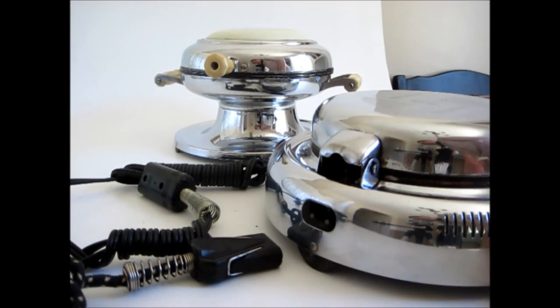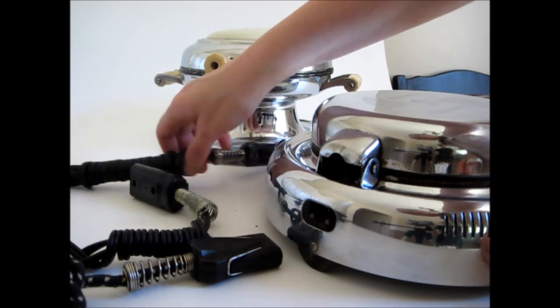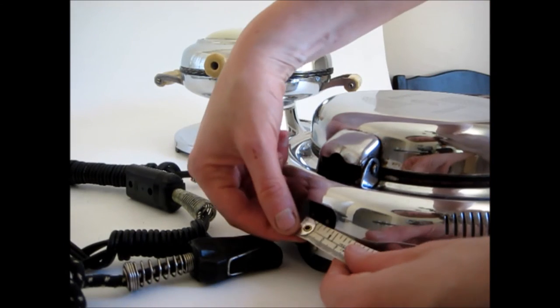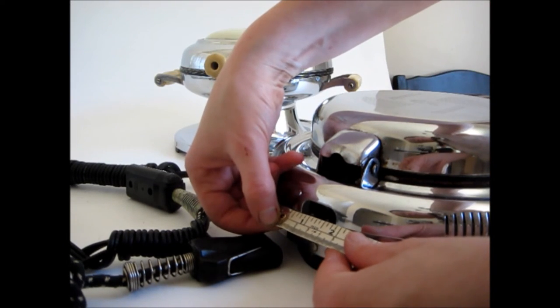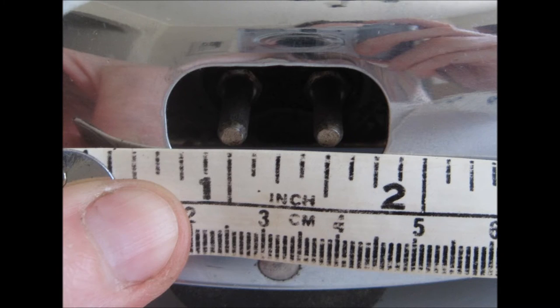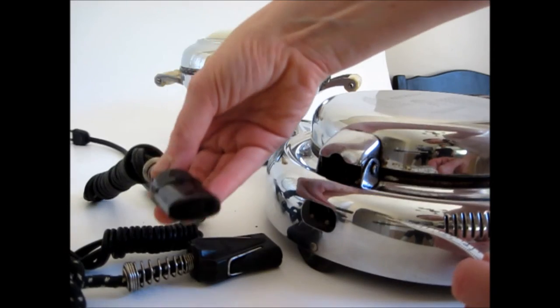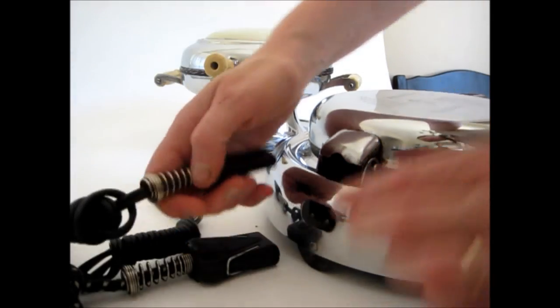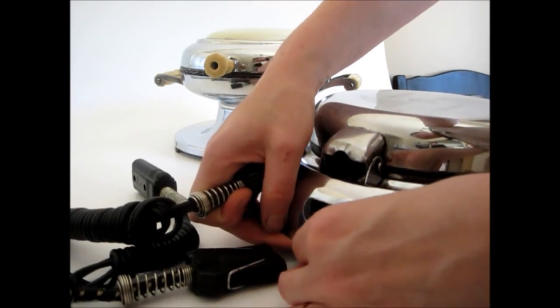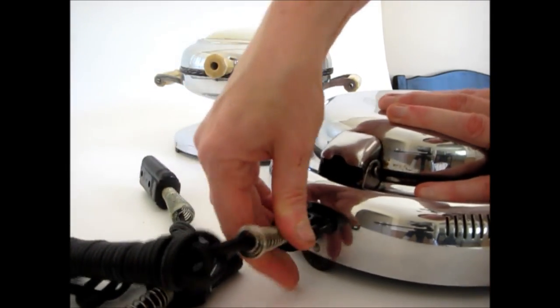This waffle iron uses a more standard half inch size. You can measure from the center of one to the center of the other, half inch. So it uses a smaller one. And it fits.